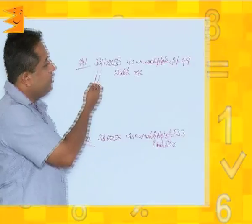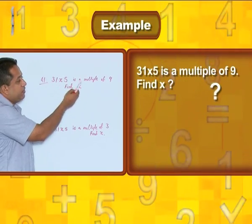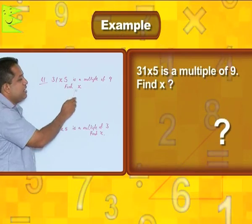Let us look at this question. 31x5 is a multiple of 9, find x.